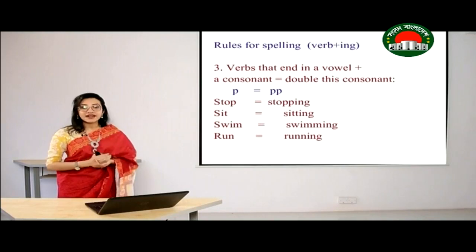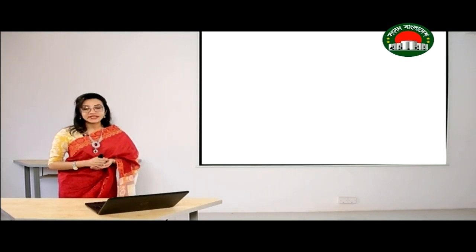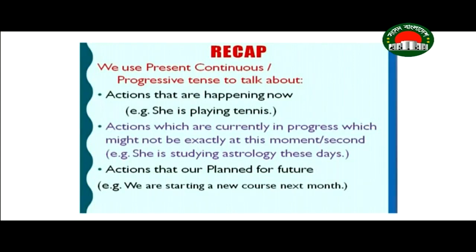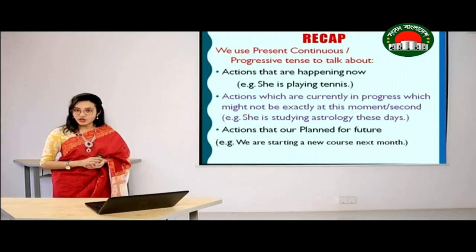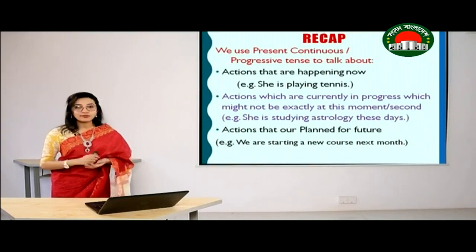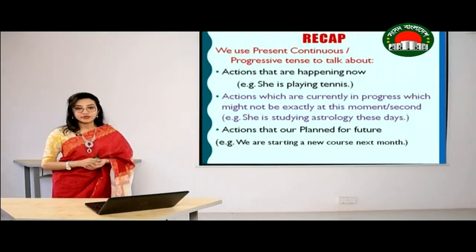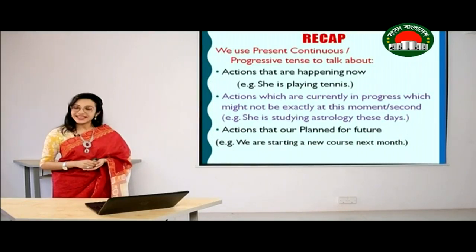Now let's have a quick recap. Today we have learned that we use present continuous or progressive tense to talk about actions that are happening now, actions which are currently in progress (which might not be happening at exactly this moment), and for actions that are planned for the future. We also looked at the structures of affirmative, negative, interrogative, and WH question sentences. Finally, we looked at some rules for adding -ing at the end of the verb.